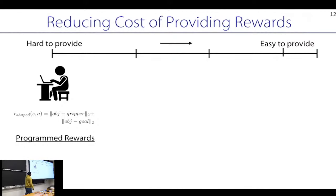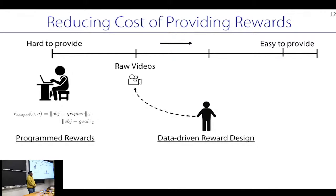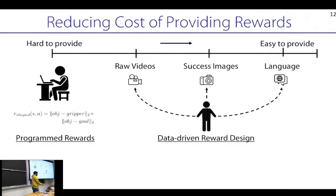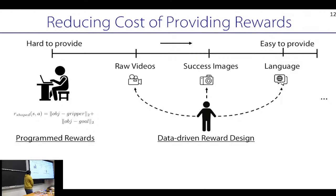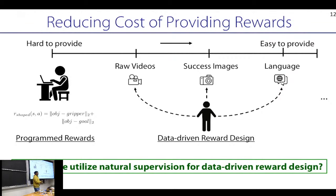To scale up RL to more realistic settings, we need ways to provide reward functions in a less costly manner — minimizing the burden on the human. We need to go from programmatically specified rewards to a more data-driven approach: rather than programming rewards in, we want to infer rewards from easier-to-specify sources of supervision like raw videos of humans doing tasks, images of successful outcomes, or language telling you what to do.